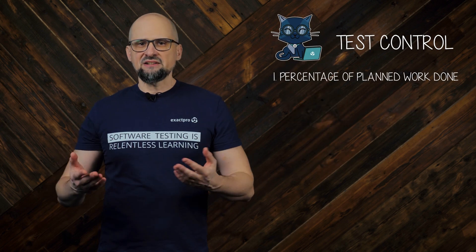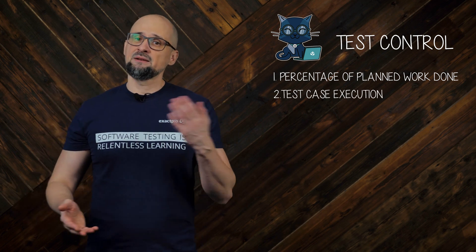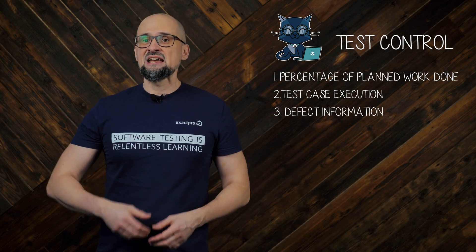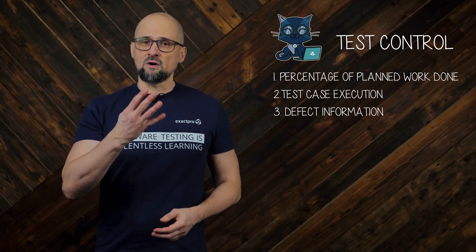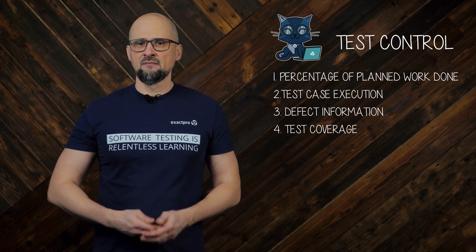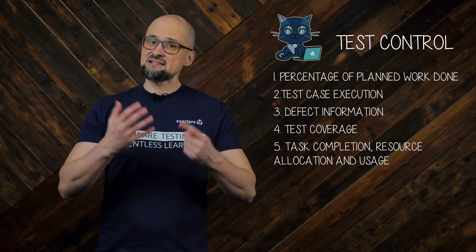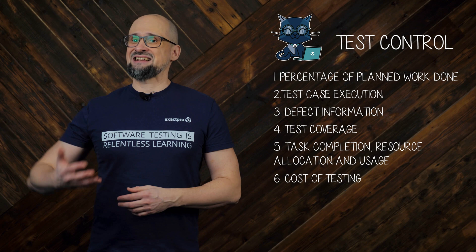Let's look at some of these metrics. First, percentage of planned work done in test case and environment preparation. Second, test case execution — for example, number of test cases run and passed. Third, defect information — for example, defect density, defects found and fixed, failure rate, and confirmation test results. Fourth, test coverage of requirements, user stories, acceptance criteria, risks, or code. Fifth, task completion, resource allocation and usage. And sixth, cost of testing — here we compare it to the benefit of finding the next defect or to the benefit of running the next test.